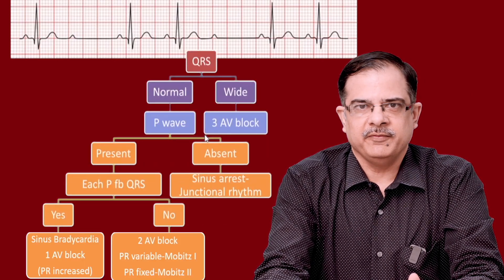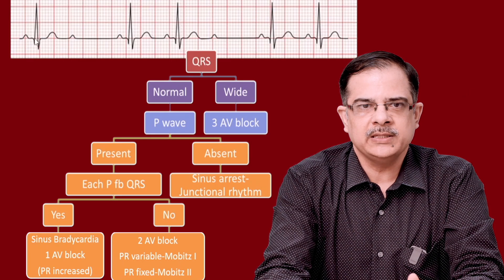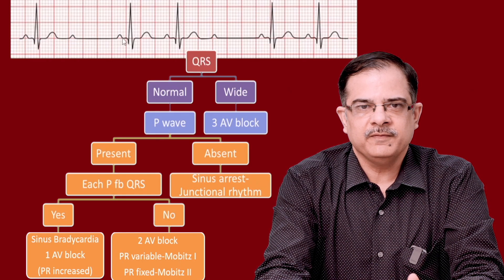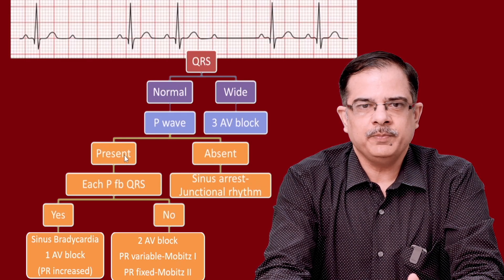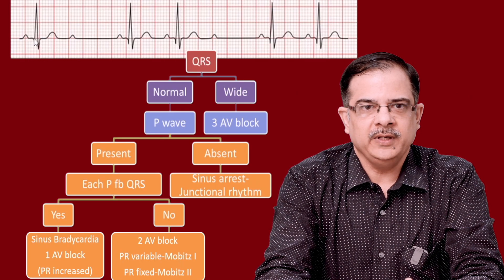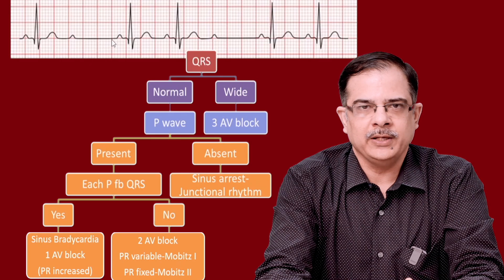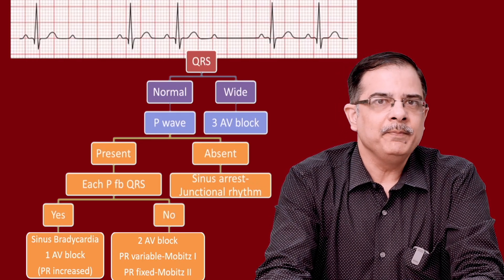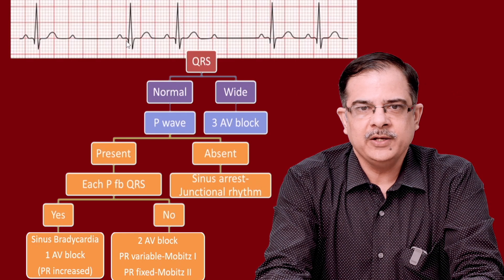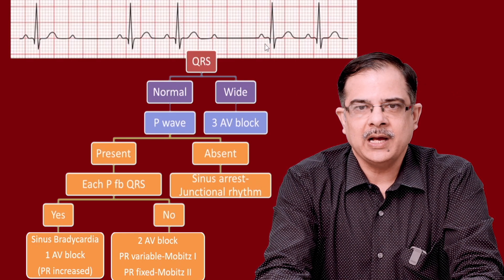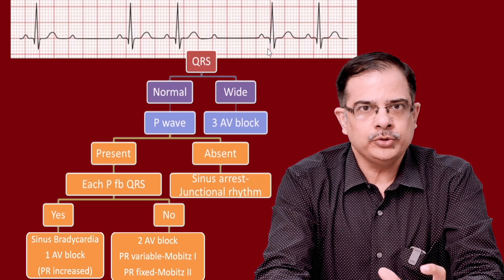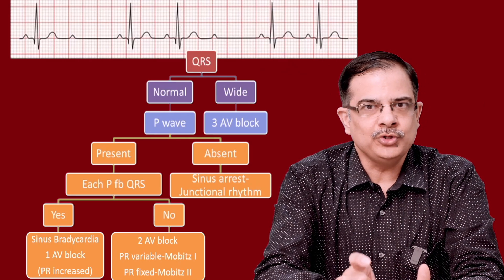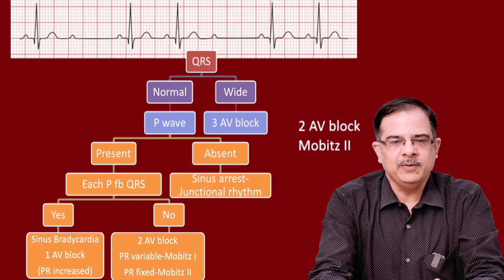Next ECG, same flowchart: QRS complex is normal width, less than 3 mm. P waves are present. Assessing each P followed by QRS: the first P wave is followed by QRS, but the second P is not — second degree AV block. Looking at PR interval: it is fairly constant throughout, approximately 4 to 5 mm on each beat. In Mobitz type 2, PR interval remains the same throughout the cardiac cycle — it can be normal or prolonged. Therefore this is second degree Mobitz type 2.